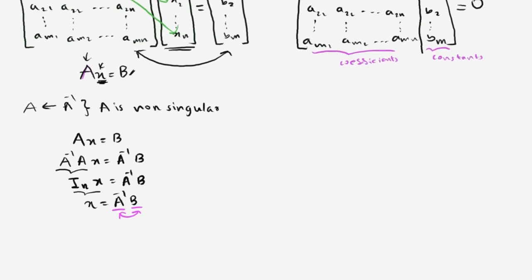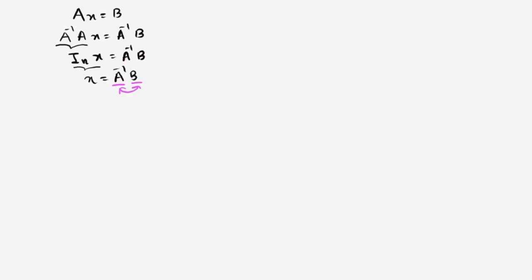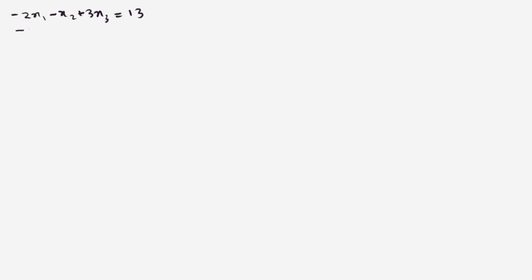So that is the basic idea about solving a linear system by using a coefficient matrix — we have to identify A inverse and b. Let's take an example. We are given a linear system: 2x₁ minus x₂ plus 3x₃ equals 13, x₁ plus x₂ plus x₃ equals 12, and x₁ minus 2x₂ minus x₃ equals 2. We have to find x₁, x₂, and x₃.